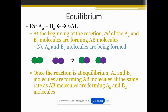So in the beginning, all of A2 and B2 are present. And they're going to start forming 2AB. Once the reaction is at equilibrium, then they're going to also be forming this material. So it's just an exchange back and forth and back and forth.